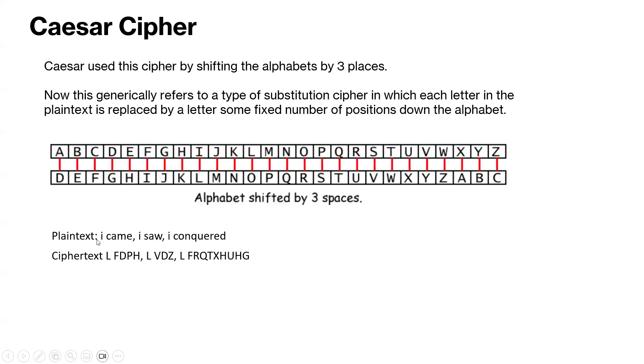So let's look at the plaintext, 'I came, I saw, I conquered.' By using this alphabetical shift, we'll look at this plaintext and then look at the ciphertext. So i is l, so wherever an i is present in this plaintext, that will be replaced with an l.